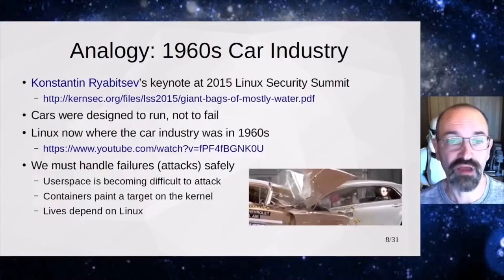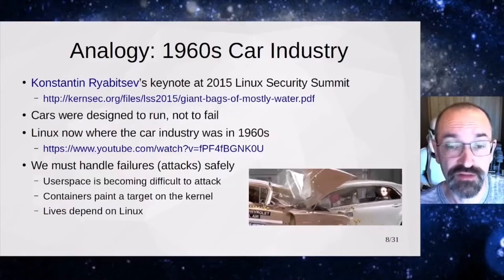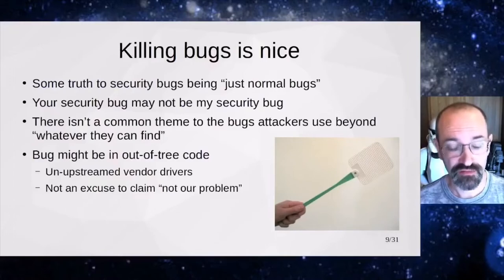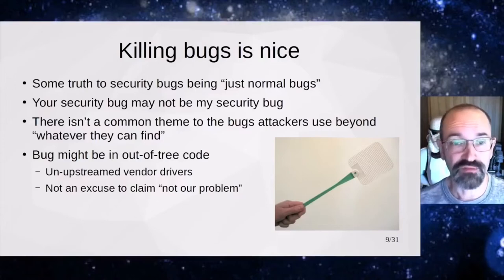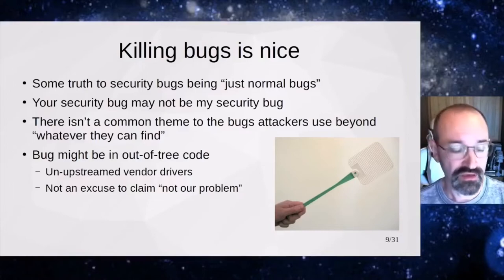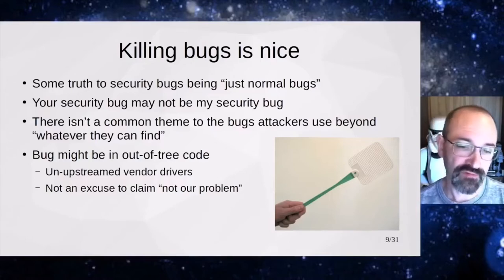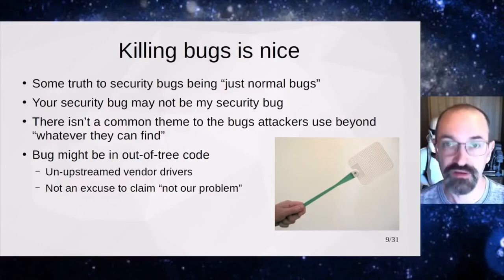A similar thing needs to be applied to the kernel as well — it needs to handle failures, which in this case means attacks, intentionally malicious manipulations. User space is becoming more difficult to attack, and containers paint a big target on the kernel since all the containers share the same host kernel. Fundamentally, lives depend on Linux. Killing bugs is nice, but security bugs are just normal bugs in a sense — it really depends on what was built in, what's being used, reachability to an API. Bugs may also be in out-of-tree code, and that's not an excuse for upstream devs to ignore language features that allow bugs to be introduced.